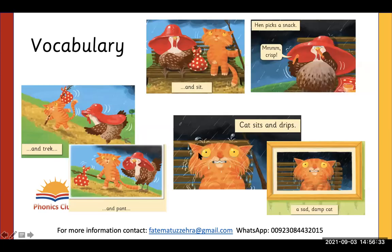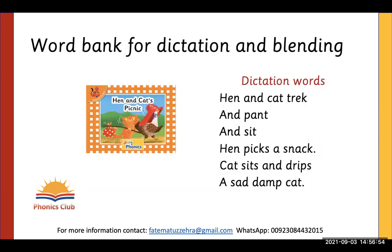There are action words in the story such as 'track,' 'pant,' 'sit,' and 'drips.' Teachers can encourage students to read and blend them and compare with the pictures to see what is happening. Students should also look at the ending of the story. Teachers can use words from this story for dictation — dictation of words, phrases, and sentences.